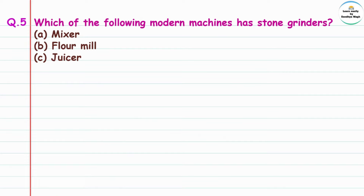Question 5: Which of the following modern machines has a stone grinder? The machines given are mixer, floor mill, and juicer. In a mixer, steel blades are used, not stone. In a juicer also, stone grinder is not used. In a floor mill, if you observe, a stone grinder is used. So the correct answer is floor mill.